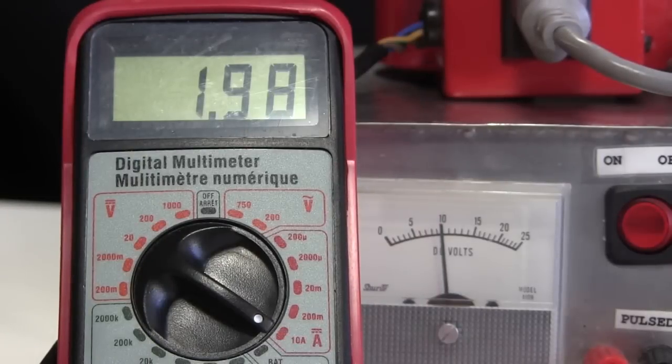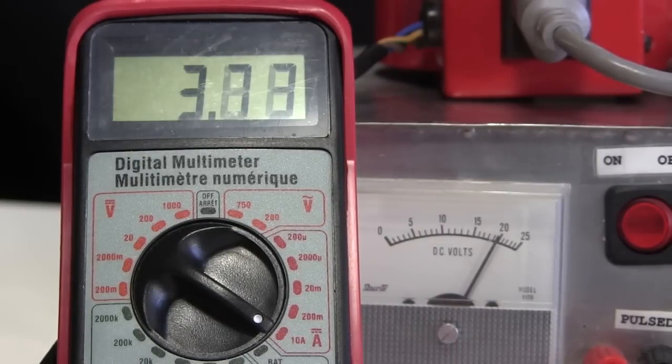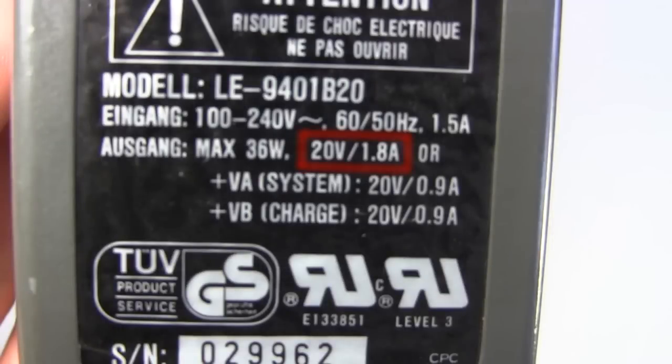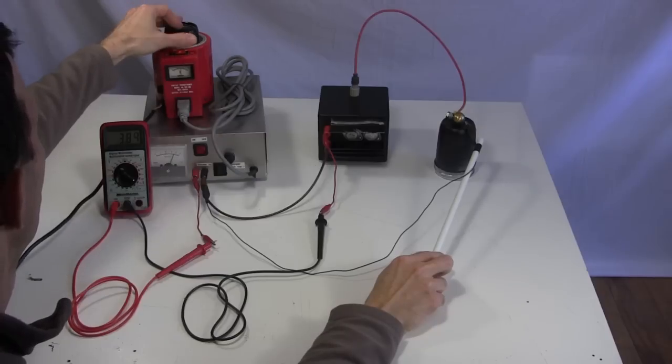At 10 volts, the cube requires around 1.9 amps. And at 20 volts, it requires 3.8 amps. Unfortunately, the laptop adapter puts out 20 volts and can handle only 1.8 amps. So I couldn't use it.